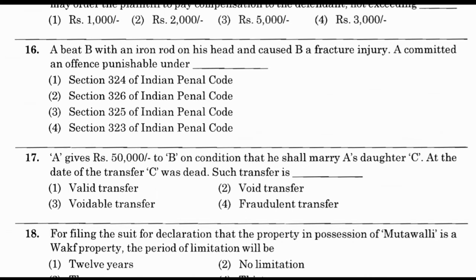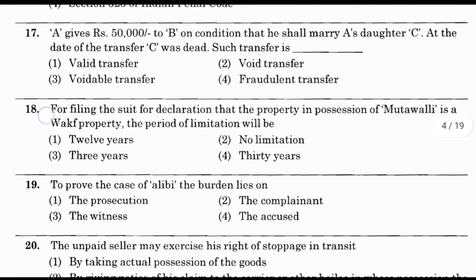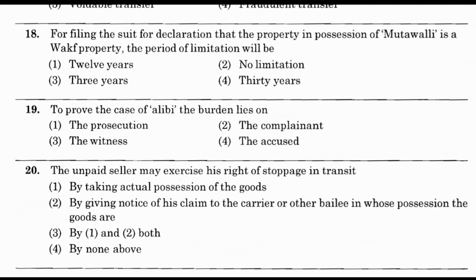Question number 17: A gives ₹50,000 to B on condition that he shall marry A's daughter C; at the date of the transfer, C was dead. Such transfer is — option 1: valid, option 2: void, option 3: voidable, option 4: fraudulent. The answer is option 2 — void transfer. Question number 18: For filing a suit for declaration that property in possession of a mutawalli is wakf property, the period of limitation will be — option 1: 12 years, option 2: no limitation, option 3: three years, option 4: 30 years. The answer is option 2 — no limitation.